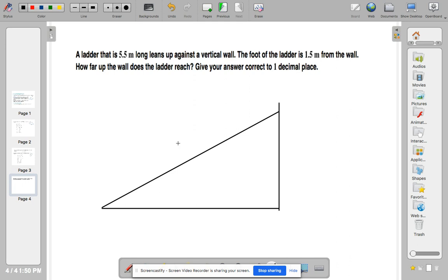So a ladder is 5.5 meters long. So we'll label the ladder 5.5 meters. And the foot of the ladder, which is here, is 1.5 meters from the wall, which is here. So that will be 1.5.